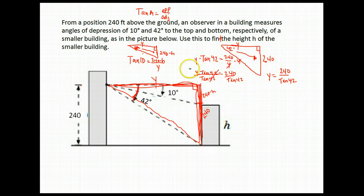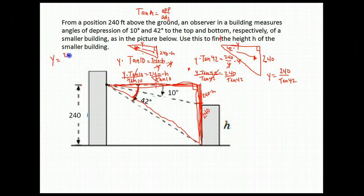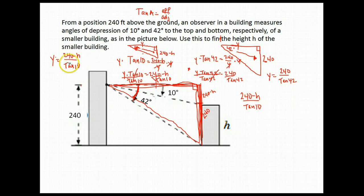Over here on this side, we want to get this equation with y all by itself. Multiply both sides by y to get it out of that denominator. That leaves me with y times the tangent of 10 equals 240 minus h. Then I divide both sides by the tangent of 10. Y is also equal to 240 minus h over the tangent of 10. They are both y, so we can set the two equal to one another.